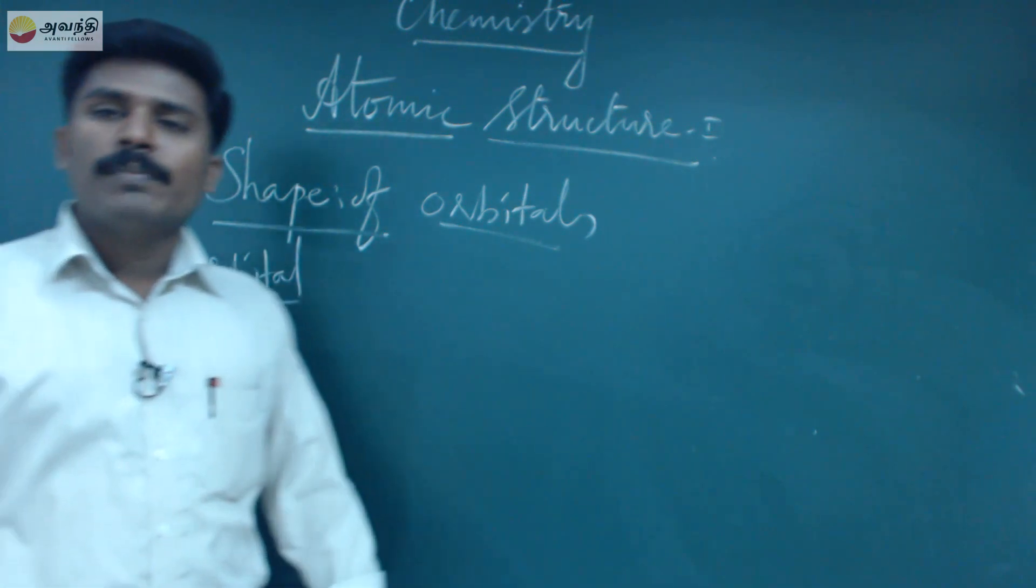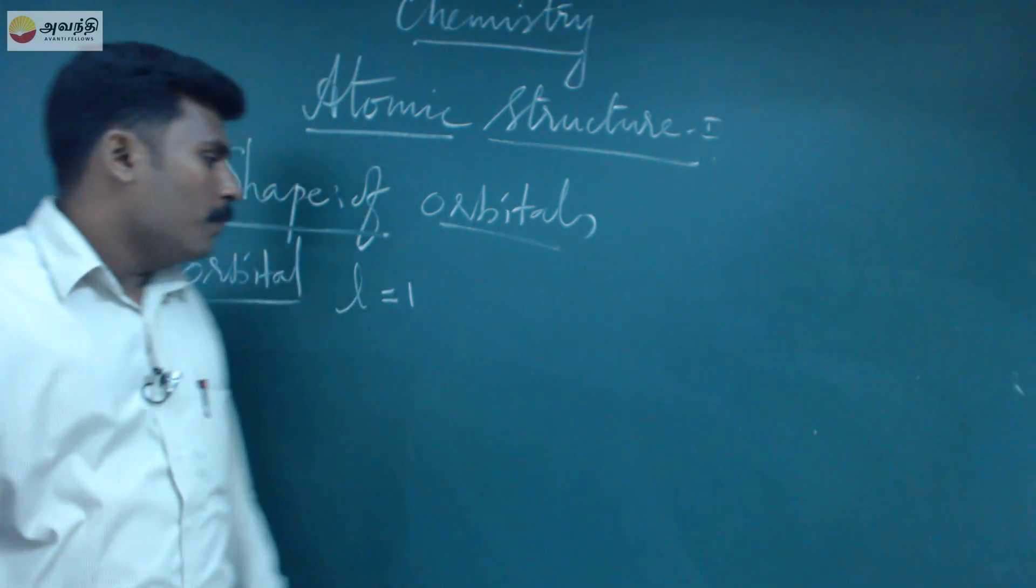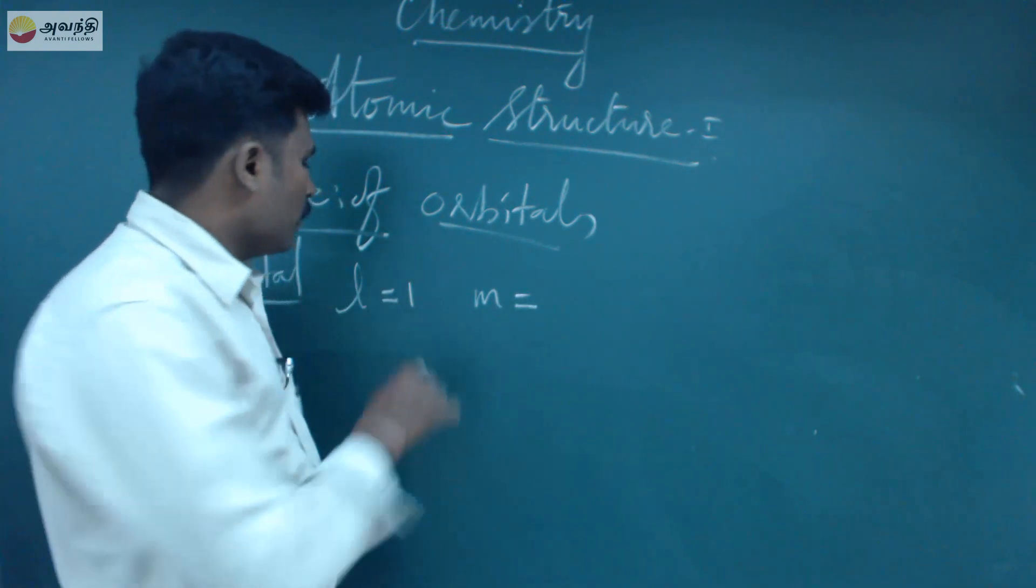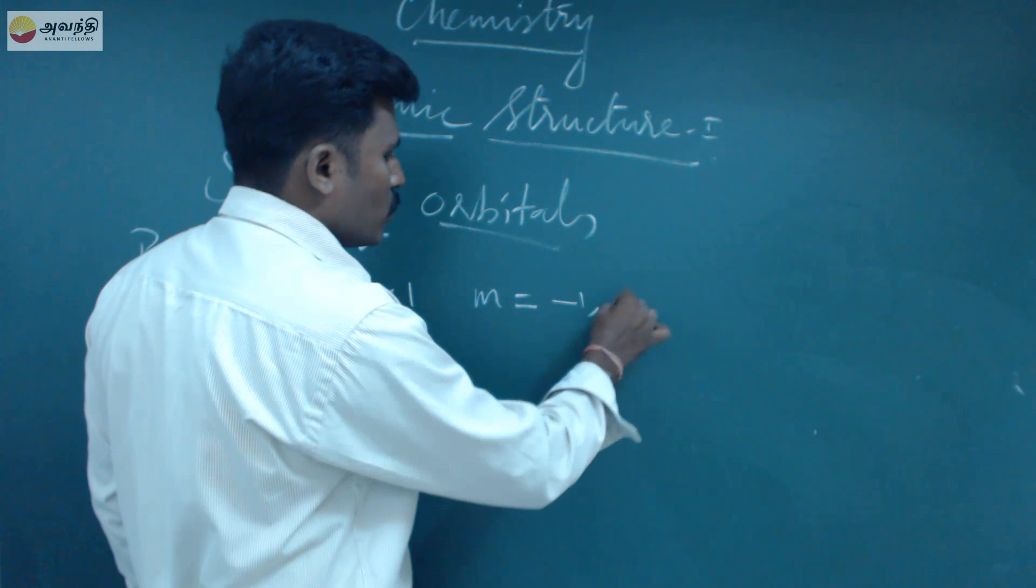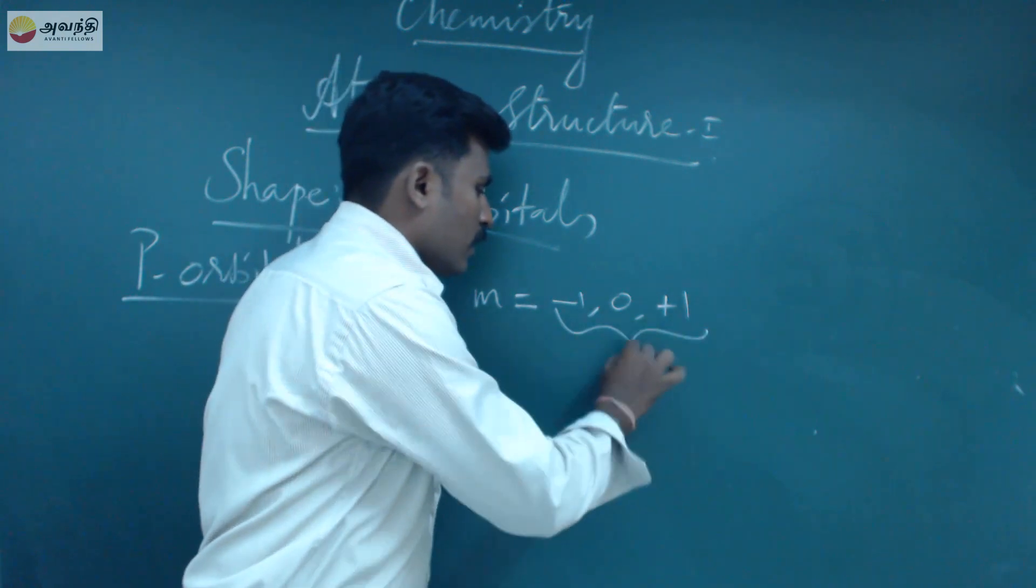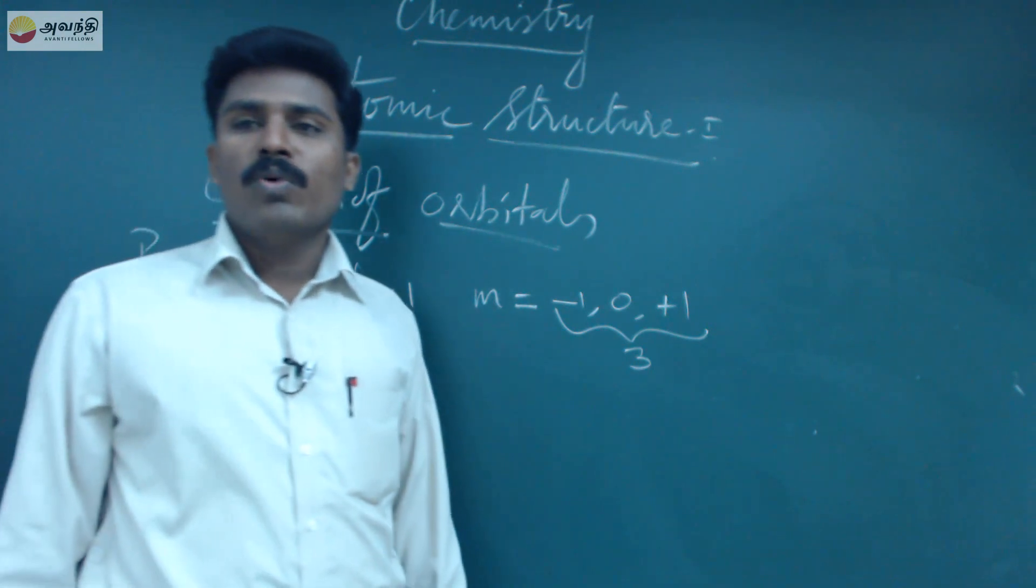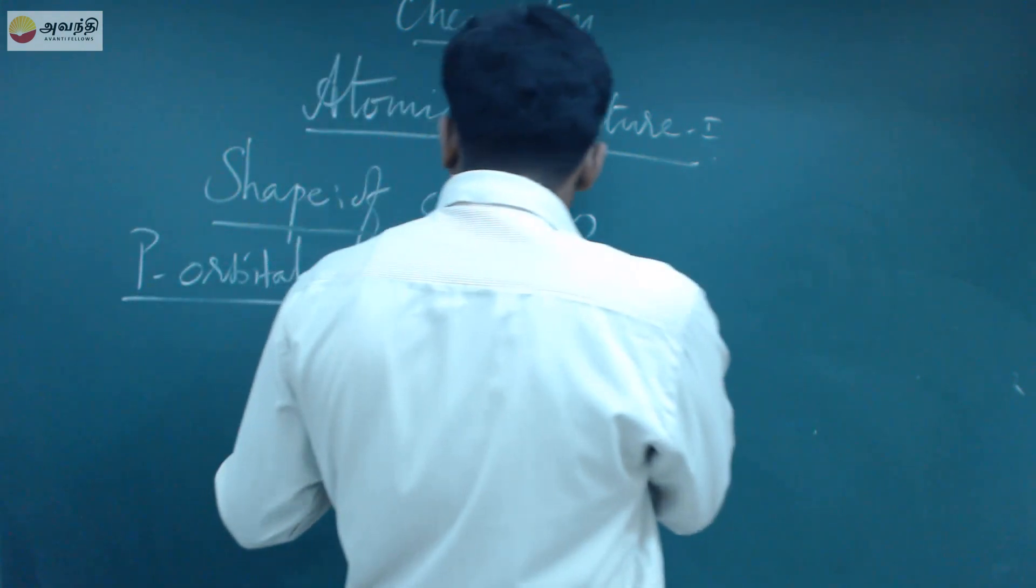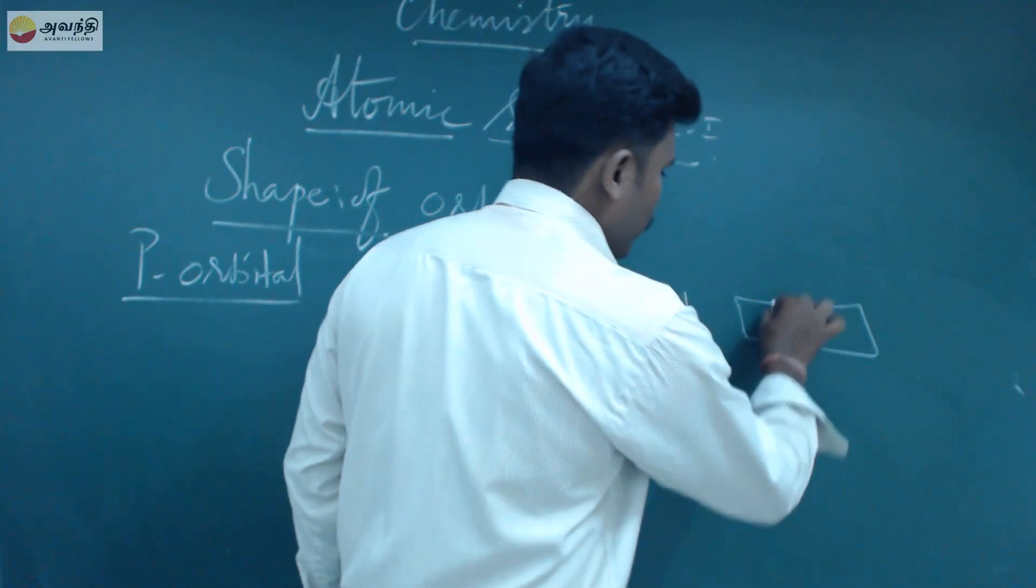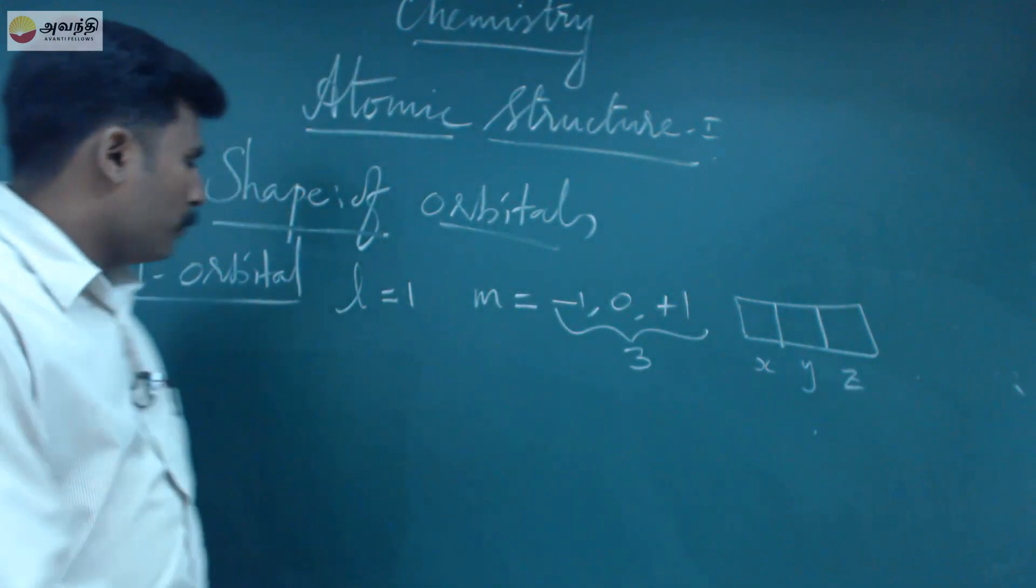For p orbital, the l value is equal to one, where l is the azimuthal quantum number. The magnetic quantum number starts from minus one through zero to plus one, giving three orientations. The p orbital splits into three types: px, py, and pz. The magnetic quantum number is three, and the shape is dumbbell shaped.